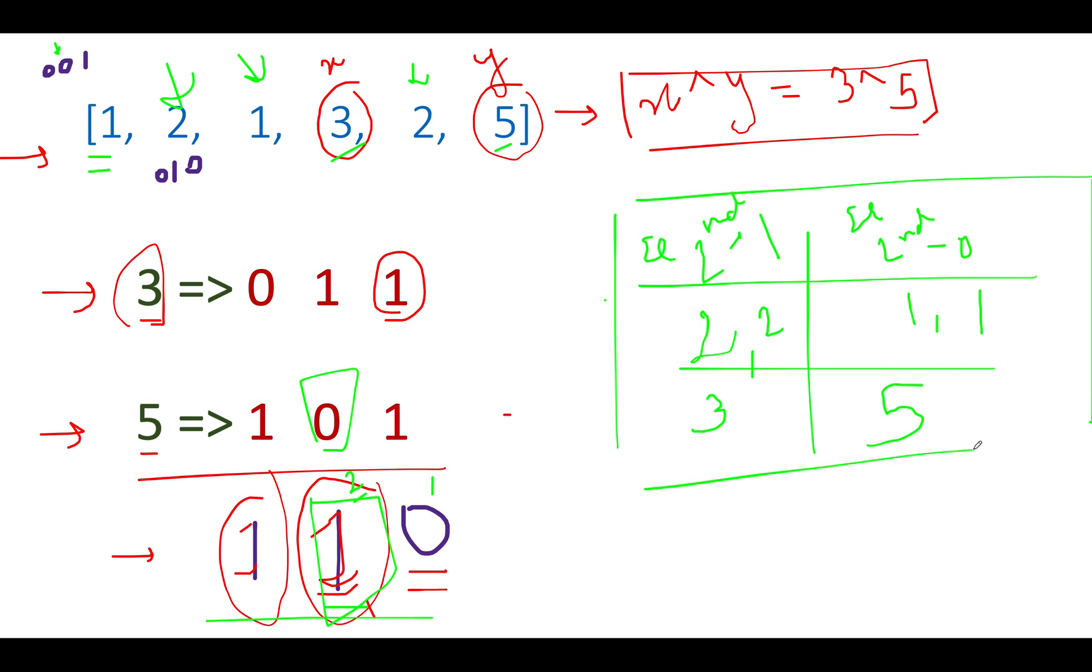And what we can say out of this computation is that these two elements will be cancelled because we are performing XOR across all these elements. What will be left? Three will be left as a result. And when we XOR all these elements together, five will be left. So the first column will store the first element that is our answer, and the second column will store the second element that is also part of our answer.